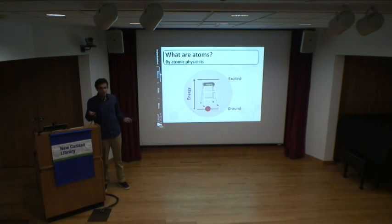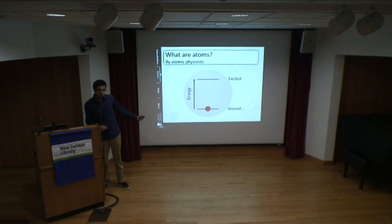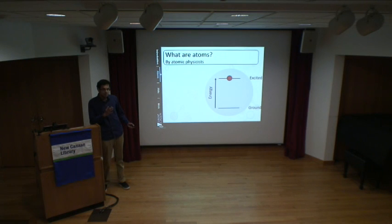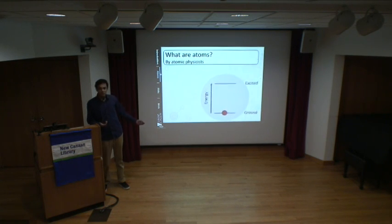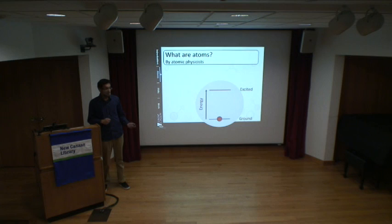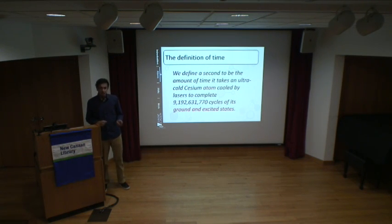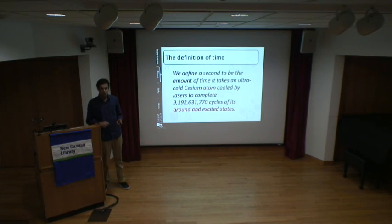If you shine a photon of the wrong color, the atom does nothing and just lets it pass through — that's really important. One final thing: when the atom absorbs a photon of the right color, it gets a kick, like an object hit by a bullet. And when the atom emits the photon, it recoils — just like you would recoil when firing a gun.